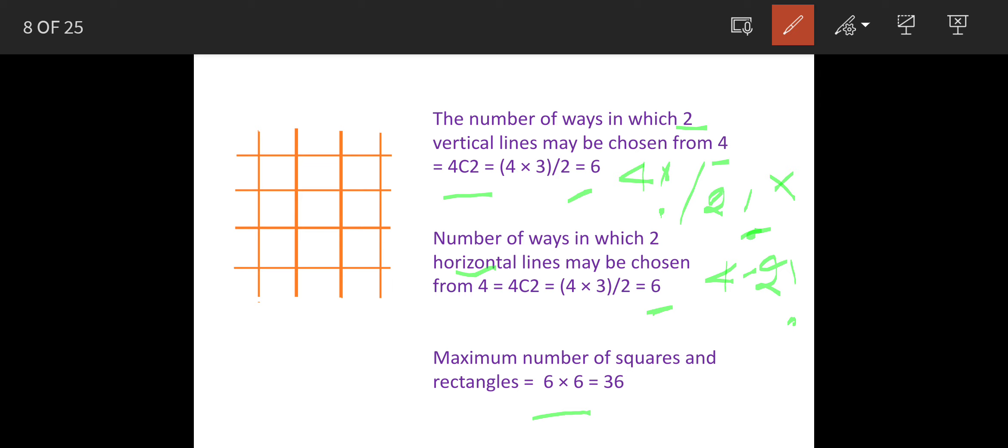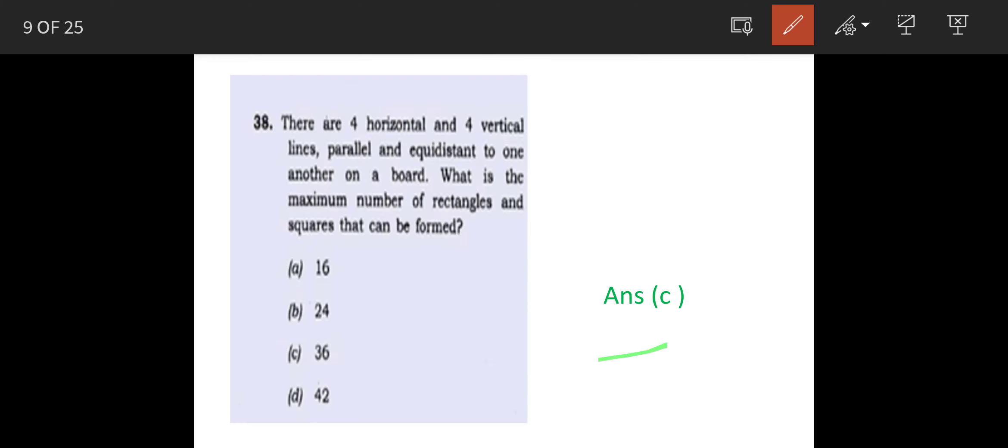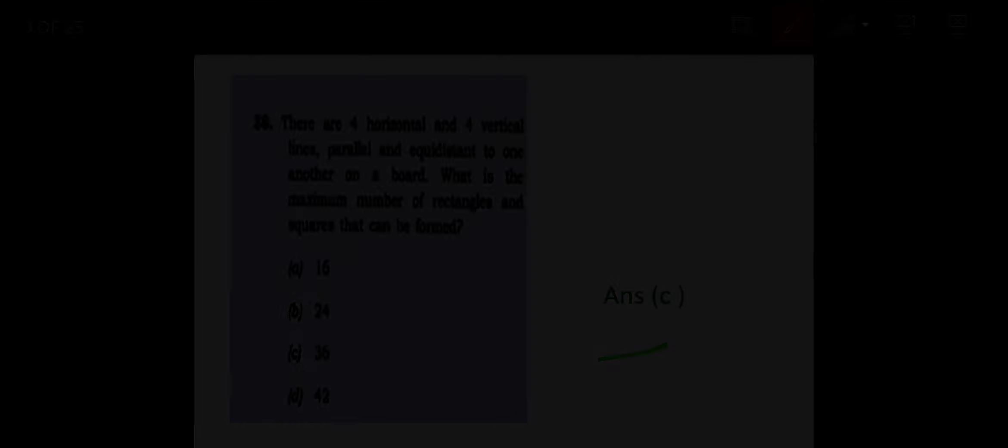Why we have multiplied here? We have multiplied here because it is AND. Had it been OR this would have been an addition, but because it is AND, the combination of vertical lines and horizontal lines, it is multiplication. So total are 36 or answer is option C. Thank you.